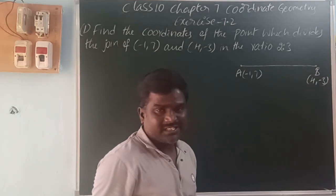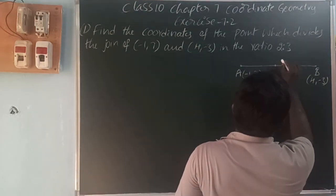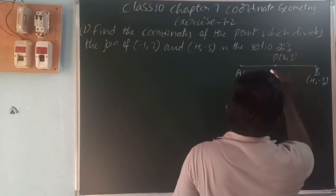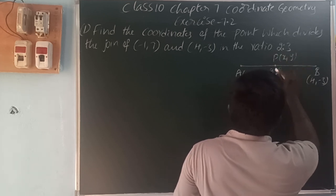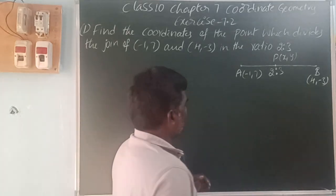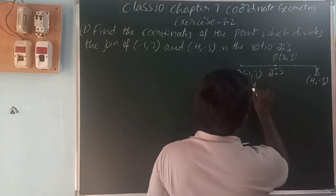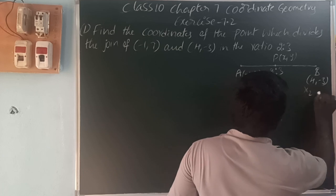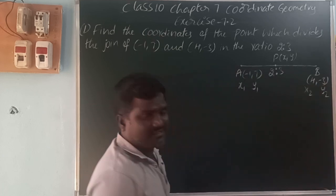This line segment is divided by point P. Let us take the point P as x comma y, in the ratio 2 is to 3. Here, x1 is minus 1, y1 is 7, x2 is 4, y2 is minus 3.